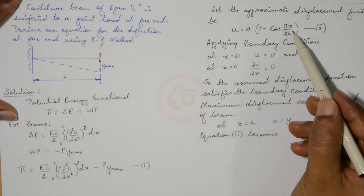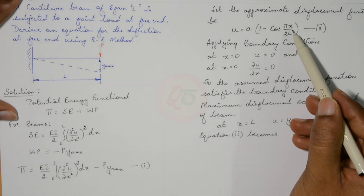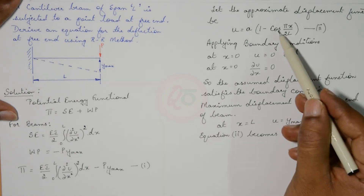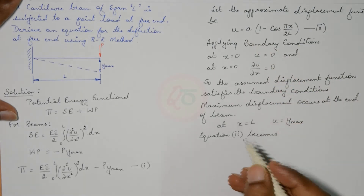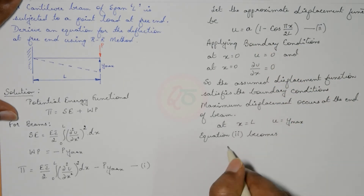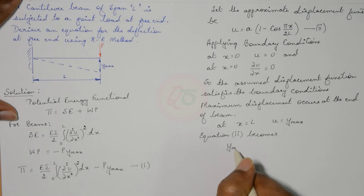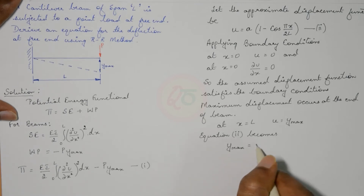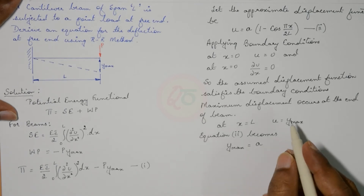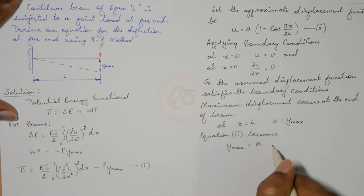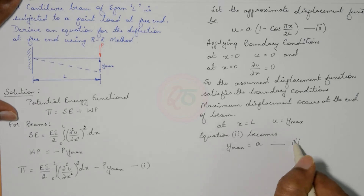Substituting x equals L into equation 2, cos(π/2) equals 0, so u equals a times 1, which gives y_max equals a. We call this equation 3.